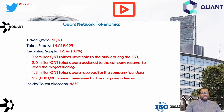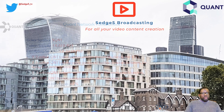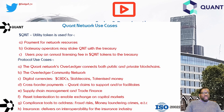Here are some use cases for Quant Network. The QNT token is the utility token for Quant Network and is used for payment for network resources. Users requiring network resources pay gateway owners fees in QNT tokens. Gateway operators may stake QNT tokens with the treasury to secure higher priority in transaction ordering. Users also pay an annual licensing fee in QNT tokens to the treasury.